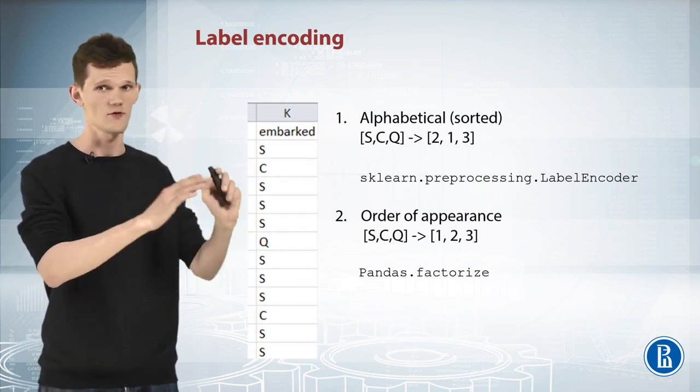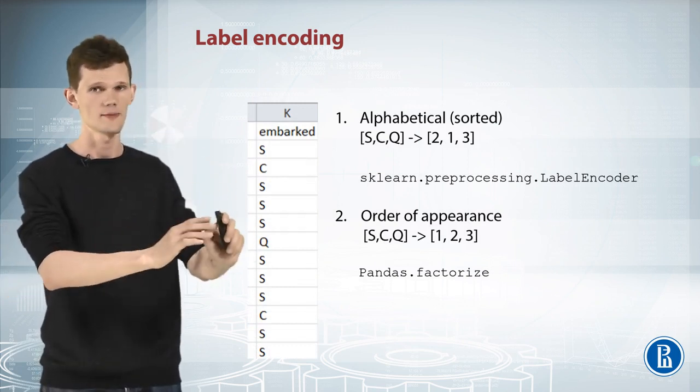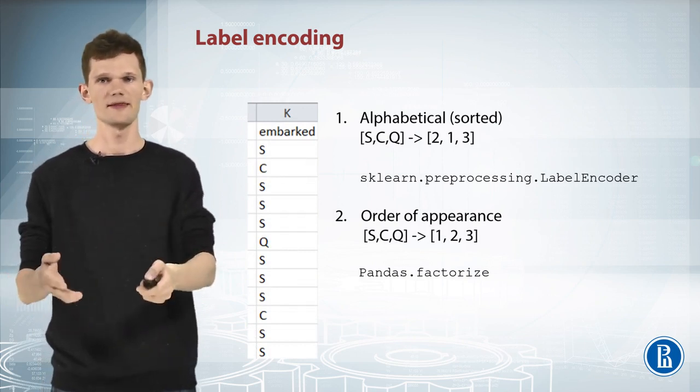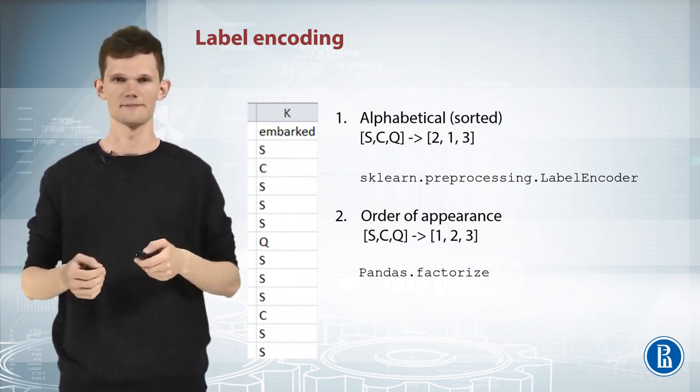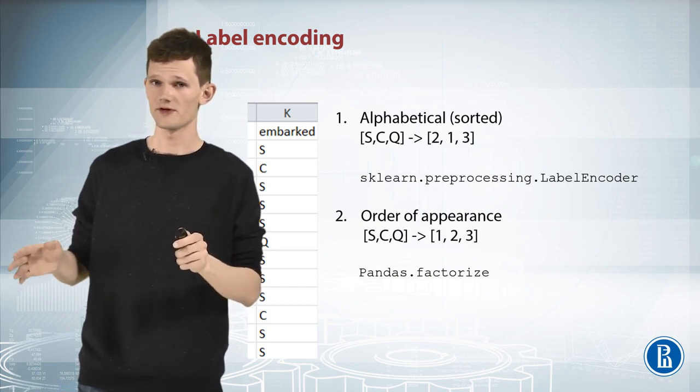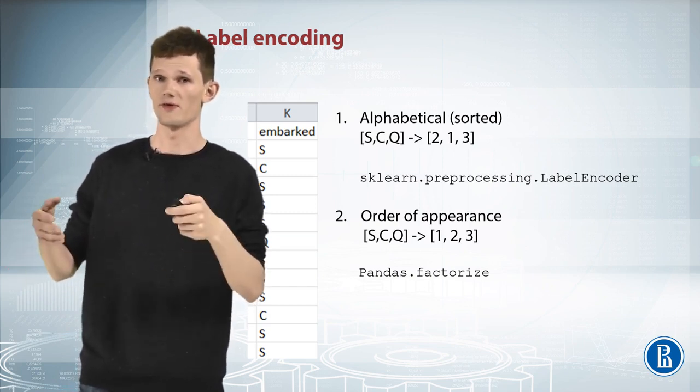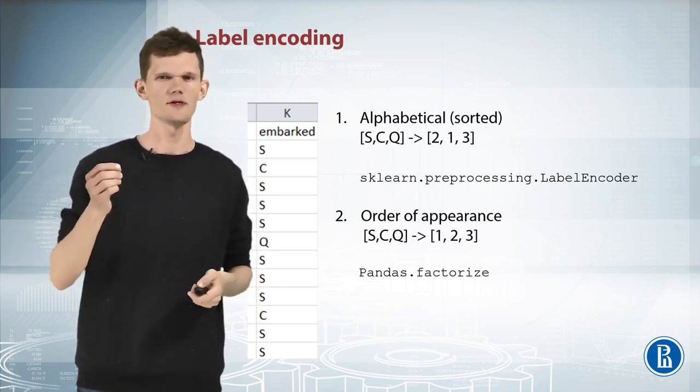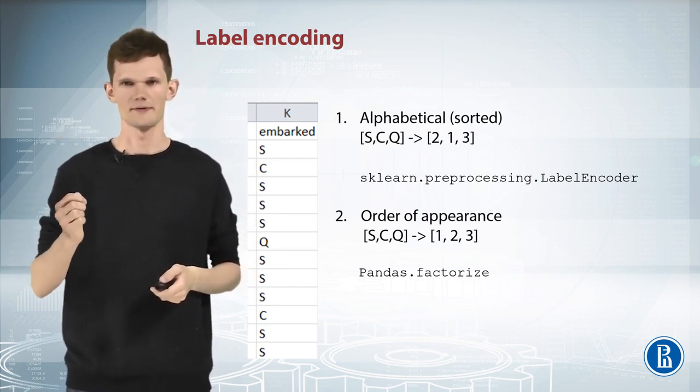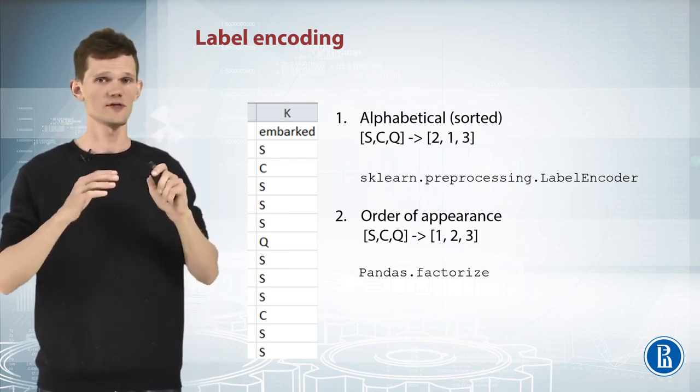Let's take another categorical feature and again apply label encoding. Let this be the feature Embarked. Although we didn't have to encode the previous feature P-Class before using it in the model, here we definitely need to do this with Embarked. It can be achieved in several ways.